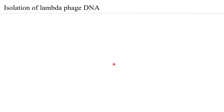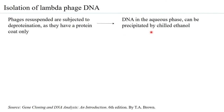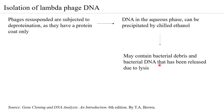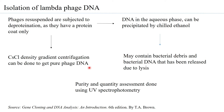The resuspended phages are subjected to deproteination, as phages have only a protein coat and DNA — you only need to remove the protein. A phenol-chloroform extraction is done to denature the protein, and in the aqueous phase you will have the DNA, which can then be precipitated with chilled ethanol or chilled isopropyl alcohol. There are chances of getting bacterial DNA fragments as contaminants, so CsCl density gradient centrifugation can be done to get pure phage DNA. After purification, purity and quantity assessment is done using UV spectrophotometry.